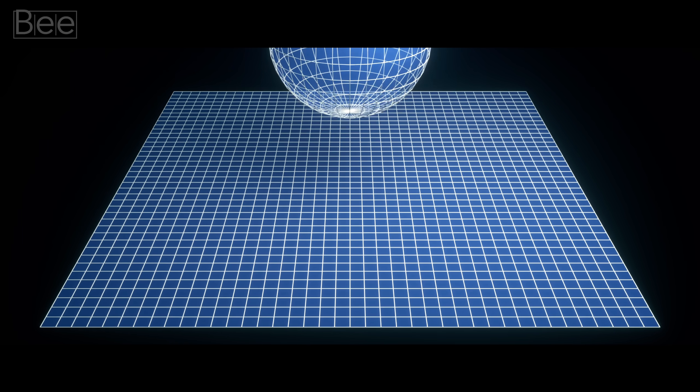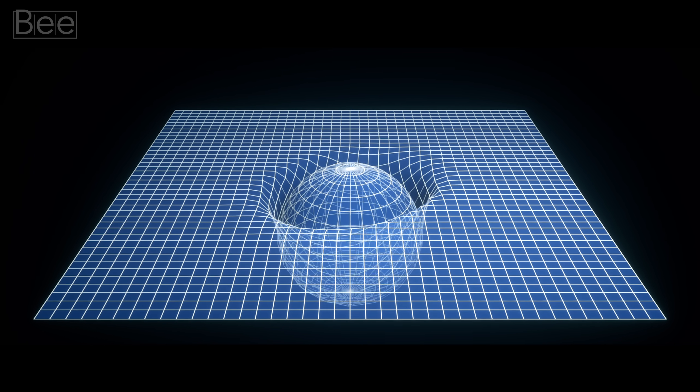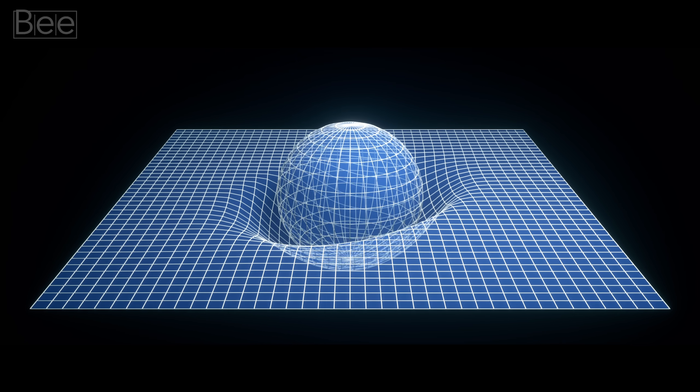This idea revolutionized the entire course of scientific history. That space somehow gets curved in the presence of gravity and it creates an illusion that the light beam is being curved. It hypothesized that whenever matter or energy present in space, it creates a curvature.